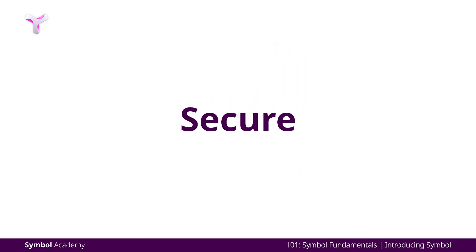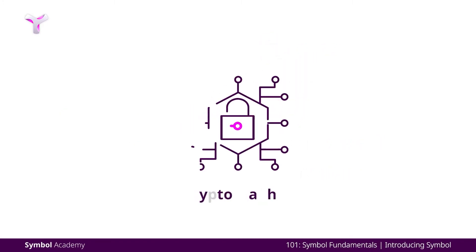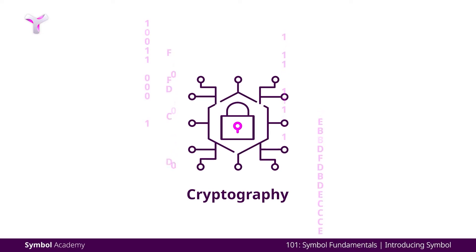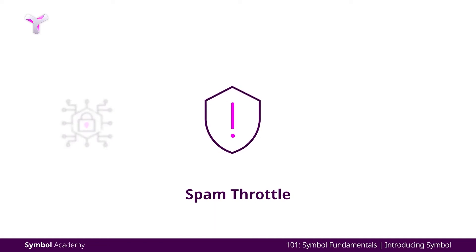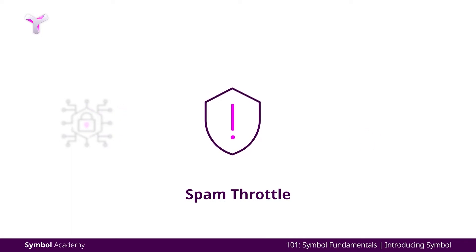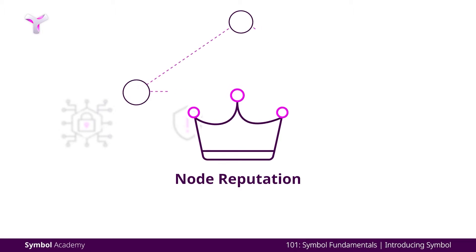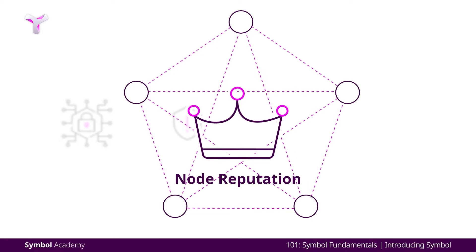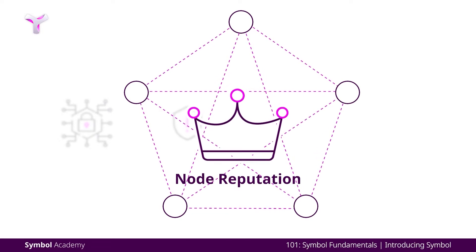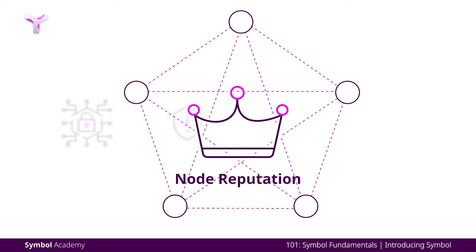Let's take a look at the first core value: security. Like all blockchains, Symbol implements a cryptographic function to secure the data over the distributed ledger network, but Symbol bolsters its security using extra measures. First, it implements a spam throttle, which prevents malicious actors from attacking the system with loads of transactions while still letting honest actors successfully submit a transaction. Node reputation plays a part in this. In a public network like Symbol, anyone can participate to be a node to query from and send data to any node in the network. In order to ensure the quality of the communication, Symbol applies a node reputation system to keep every participating node accountable.